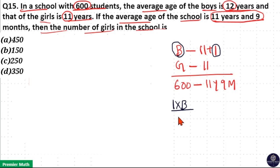1 into B, this number should be equally distributed to the 600 students. Now 1 into B by 600 equals this extra 9 months. Because 11 is common, I have taken 11 as common.